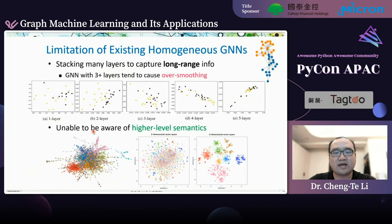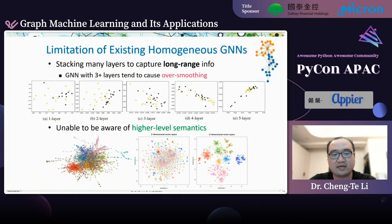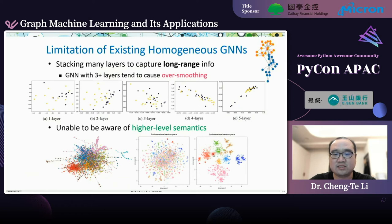The second limitation is that node embeddings cannot be aware of high-level semantics, such as cluster information. In a social network, nodes may belong to clusters like students in the same department or the same club. Conventional homogeneous GNNs cannot encode this cluster information into node representations, so nodes belonging to the same cluster may not be projected close together in the embedding space.